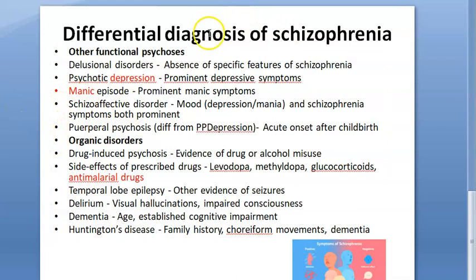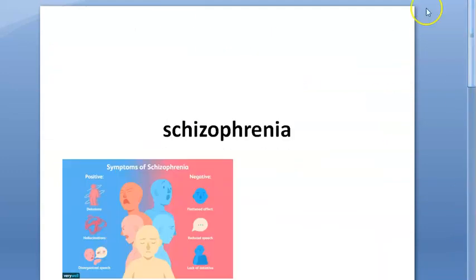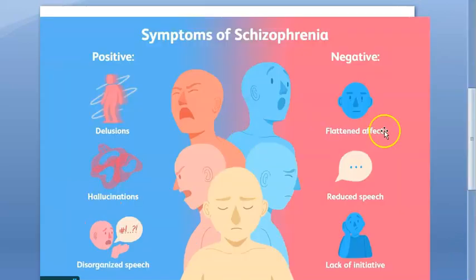So these are the differential diagnoses of schizophrenia that you will have to rule out. That's it for this video on the differentials for schizophrenia.